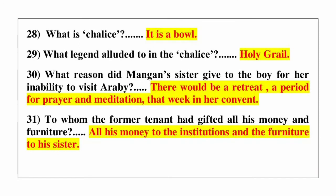Question number 28: what is Chihilis? Answer is it is a boy. Question number 29: what legend is alluded to in Chihilis? Answer is Holy Grail. Question number 30: what reason did Mangan's sister give to the boy for her inability to visit Arabi? Answer is there would be a retreat, a period for prayer and meditation that week in her convent.